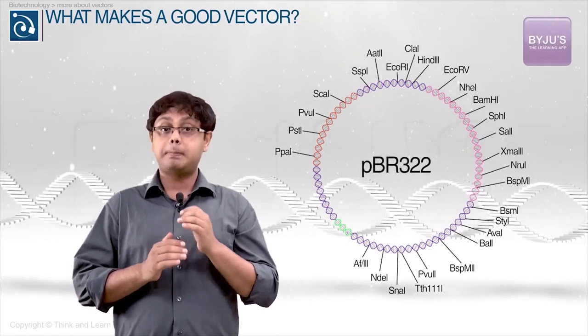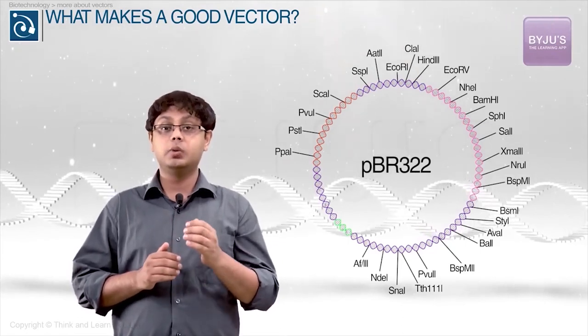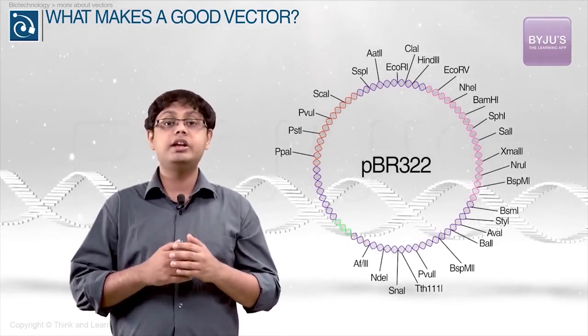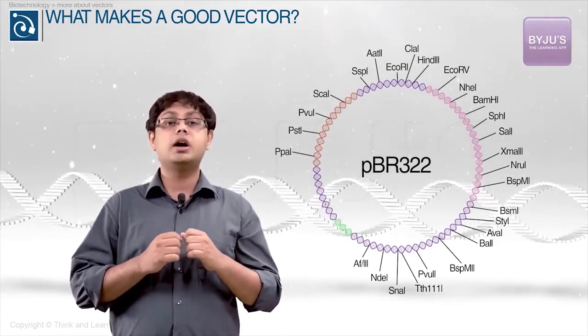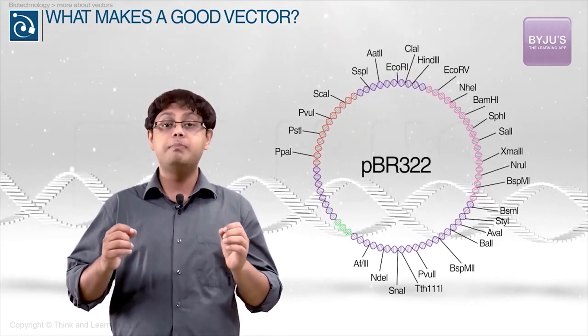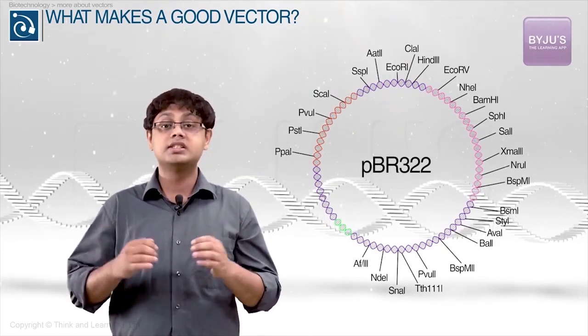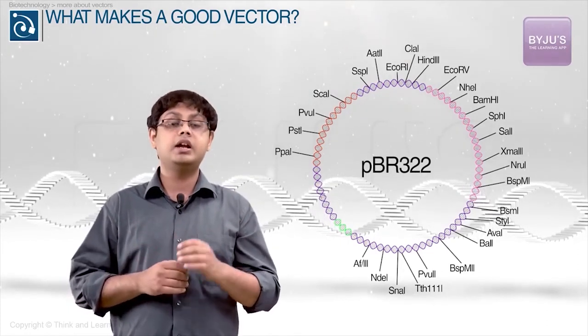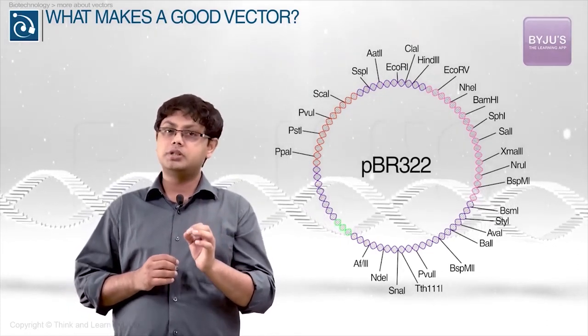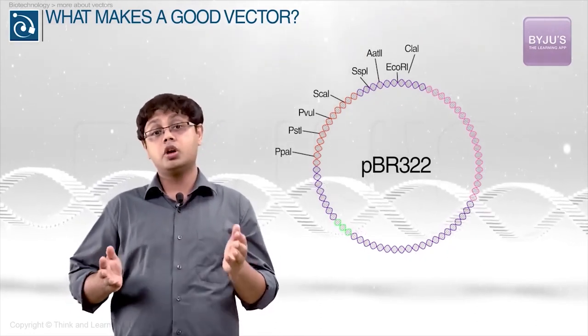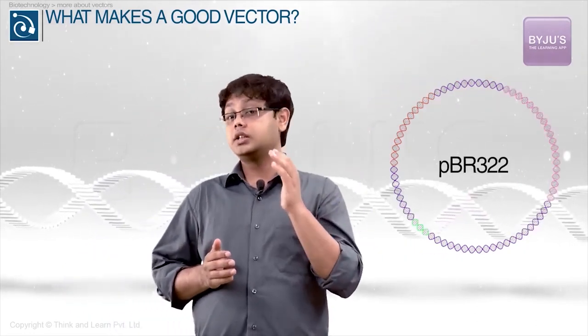However, plasmid cloning vectors have been engineered over the years to incorporate a number of other important features that have made PBR322 obsolete. But we will still learn about PBR322 a little later on.